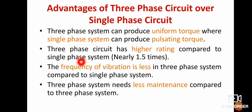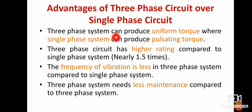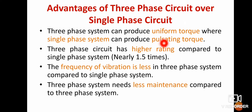Three-phase system can produce uniform torque, whereas single-phase system can produce only pulsating torque. Torque is one example of mechanical output. The three-phase system will produce uniform torque, but in case of single-phase system it can produce only pulsating torque. Of course, uniform torque is better.